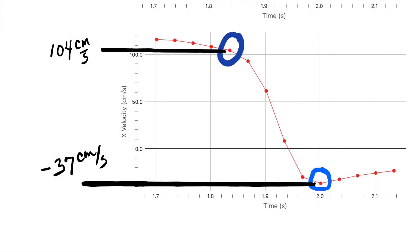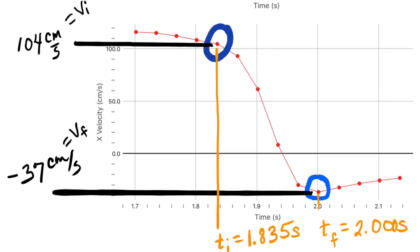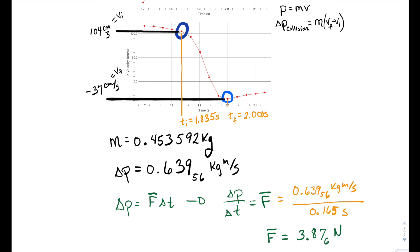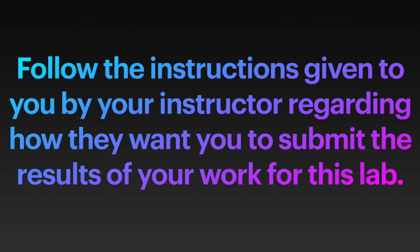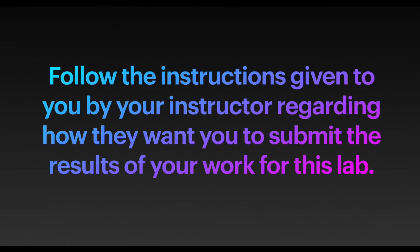That's how I got a decent reading of my initial and final velocities and times. My initial velocity is 104 cm per second and my final velocity is negative 37 cm per second. My initial and final times are shown here. Be sure to have your mass in kilograms, your speed in meters per second, and your time in seconds — you may need to do some unit conversions. Using the equation shown at the beginning of this video, I can calculate the average force on the croquet ball. Follow your instructor's instructions regarding how to submit your results for this lab.